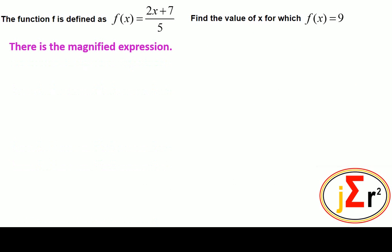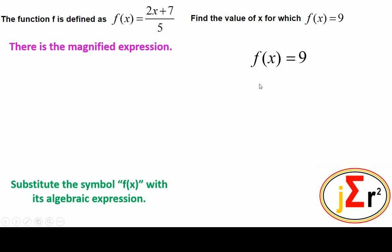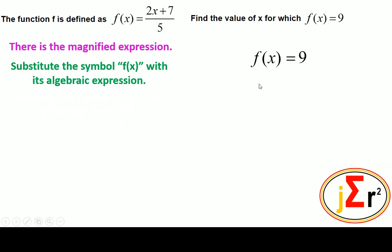We will bring the expression f(x) = 9 to the fore. f(x) = 9 and we need to find the value of x for which f(x) = 9. Our first step will be to write the algebraic expression for f(x) in place of f(x), which is done by a simple substitution — substitute the symbolic f(x) for its algebraic expression.